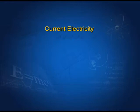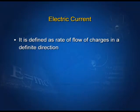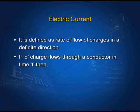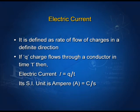Current Electricity is the branch of Physics which deals with the study of charges moving in a definite direction. Electric current is defined as the rate of flow of charges in a definite direction. If Q charges flow through a conductor in time t, then electric current i equals Q upon t. Its SI unit is ampere, which is coulomb per second.